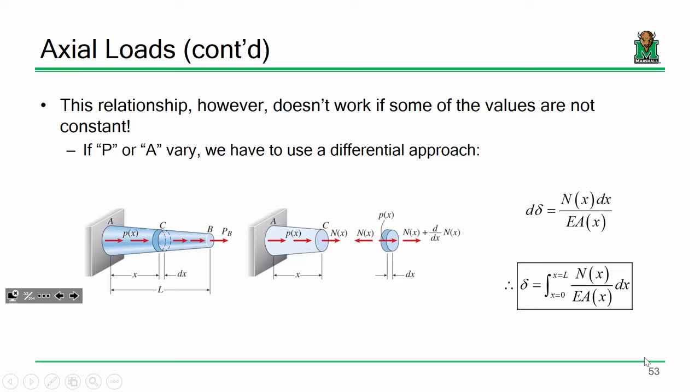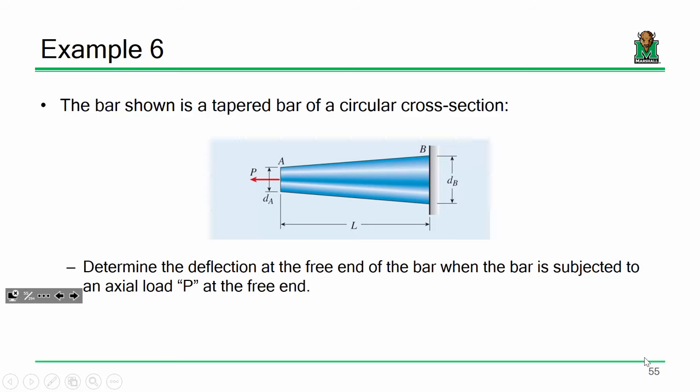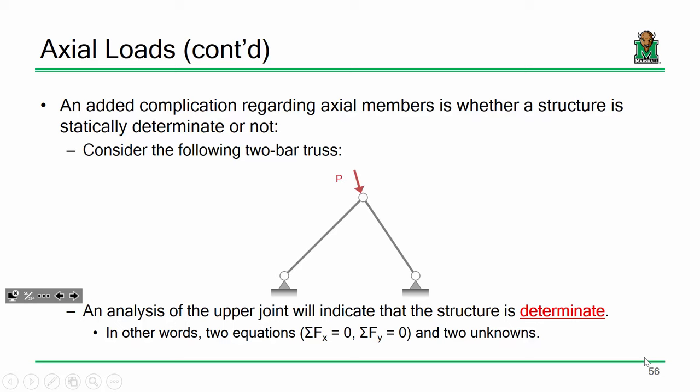What's made it complicated is that we can have variable problems — instances where the load varies and where the area varies. Technically E could vary as well, but that's pretty unlikely in a real-world scenario. If you've got two bars of different materials, you wouldn't use calculus — you'd just add up the stress for each bar. We looked at two problems: one where the load varies and one where the area varies. That's where we left off.